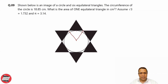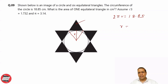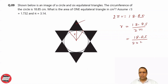Let's say the radius of this circle is r. So, 2πr is equal to 18.85. Now they are asking: what is the area of one equilateral triangle in centimeter square? So, we are looking for the area of one black triangle. r is equal to 18.85 upon 2π, which is 18.85 upon 2 × 3.14.